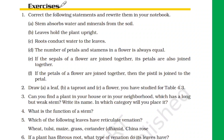So let us get started with this question. The first sentence is: stem absorbs water and minerals from the soil. The corrected answer is: roots absorb water and minerals from the soil.